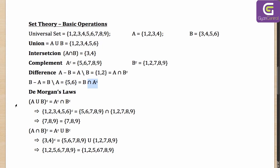De Morgan's laws: for A union B with a complement applied, you distribute the complement — A becomes A complement, B becomes B complement, and union becomes intersection. Let's verify: A union B was {1,2,3,4,5,6}, so its complement is {7,8,9}. A complement is {5,6,7,8,9} and B complement is {1,2,7,8,9}. Their intersection is {7,8,9} — the same answer, confirming the law.